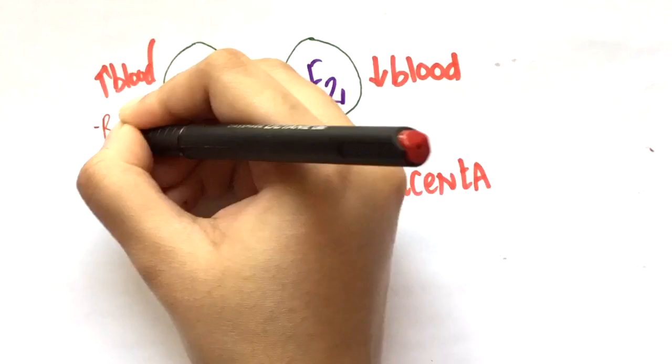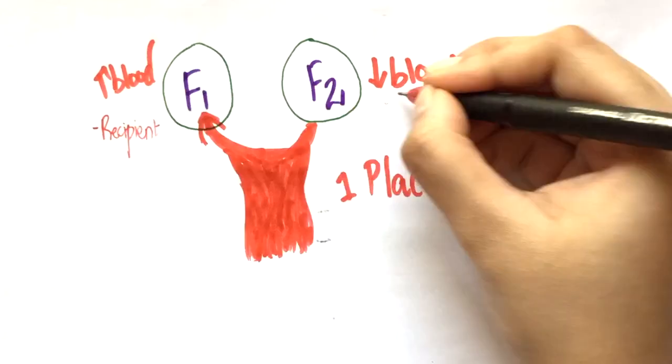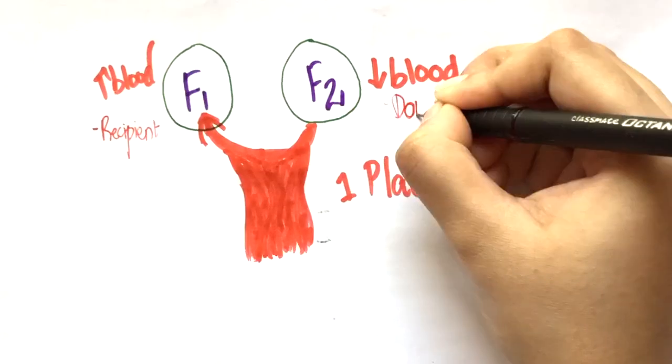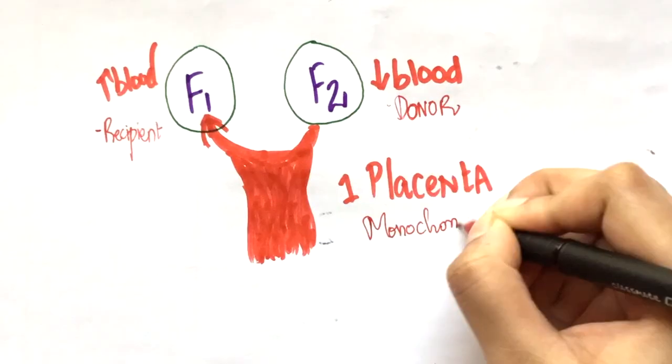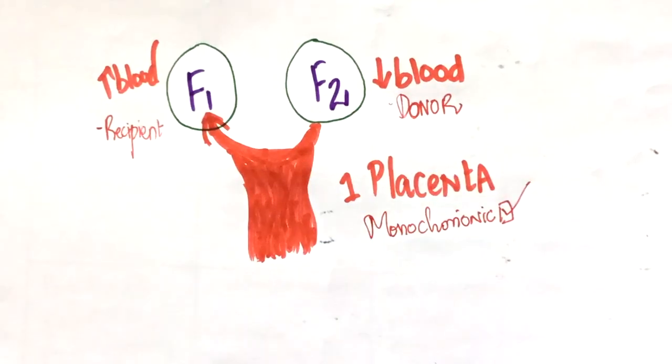This means blood from one baby will be transfused into the other baby. The baby that's receiving blood is the recipient while the baby from which blood is taken away is the donor twin. So, twin-twin transfusion syndrome is more likely in monochorionic pregnancies.